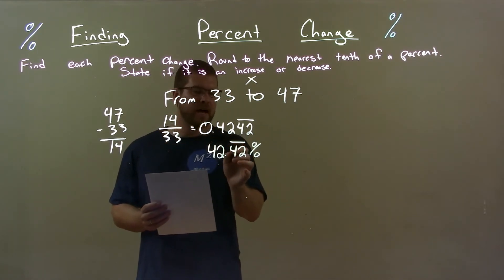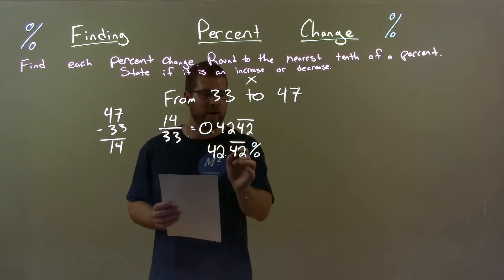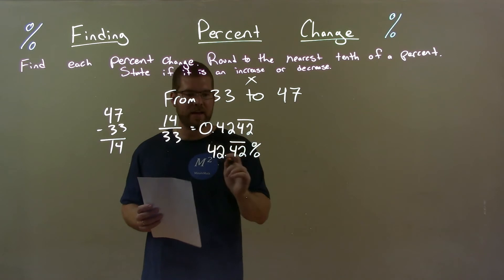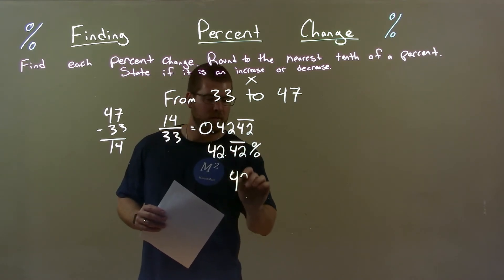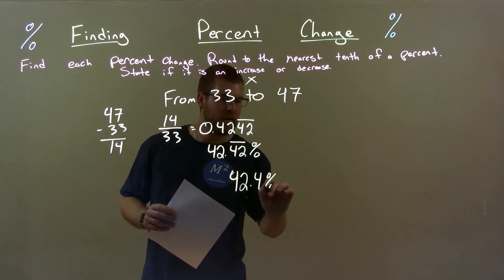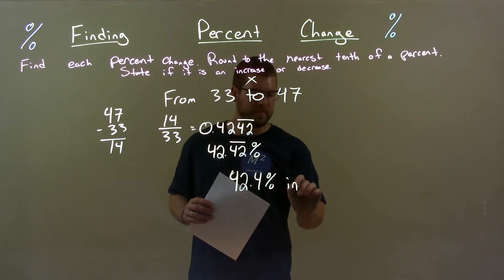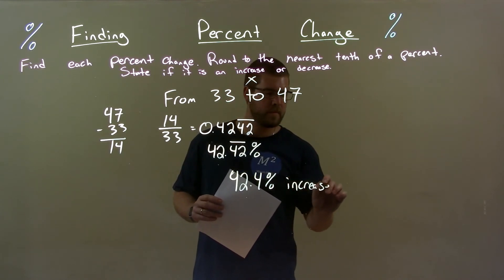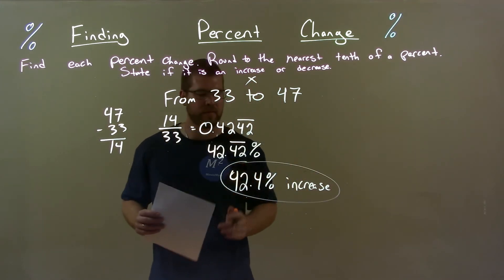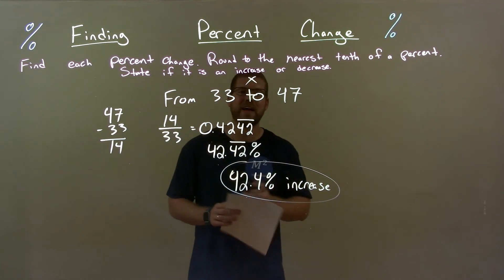Well, rounding that to the nearest tenth, that 4 and the 2, we round it to just the 4. The 2 causes the 4 to stay as a 4. So we have 42.4 percent. We said it was an increase. So there we have our final answer, a 42.4 percent increase.